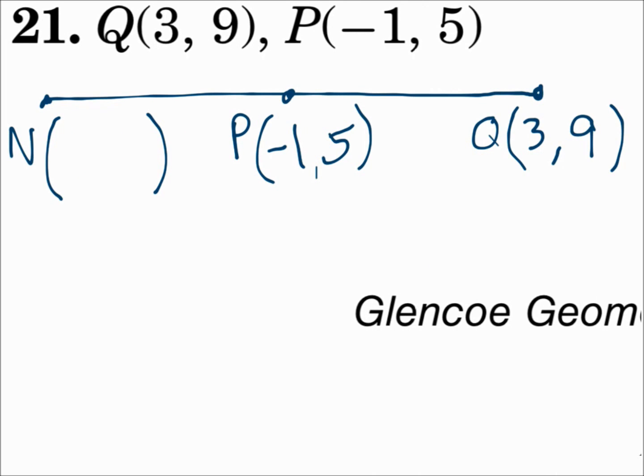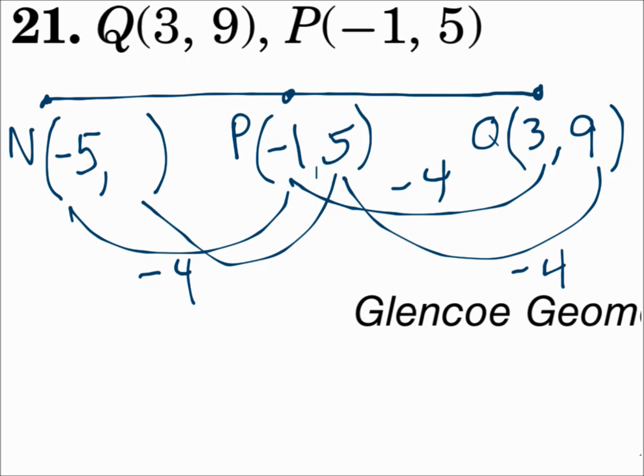For the last one, P is the midpoint. N and Q are the endpoints. Look at the x values. From 3 to negative 1, you're subtracting 4. Subtract 4 more, and you get negative 5. Look at y. From 9 to 5, you're subtracting 4. Subtract 4 more, to get 1. Negative 5, 1 is the other endpoint.